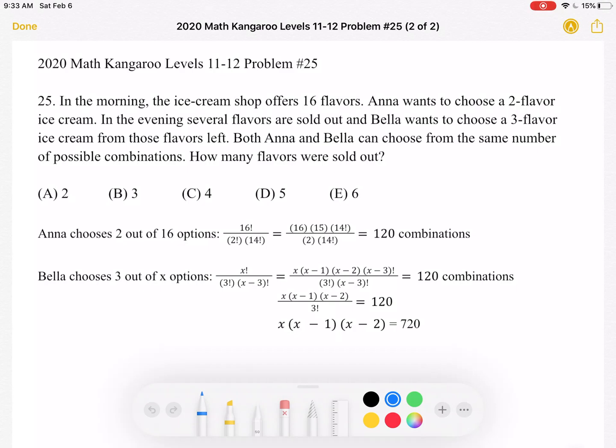So let's start with Anna. We know that Anna wants to choose a two-flavor ice cream from 16 flavors. So the total number of ways she can do that is 16 choose 2, which is 16 factorial over 2 factorial times 14 factorial. We can rewrite 16 factorial as 16 times 15 times 14 factorial. In this way, we can cancel out the two 14 factorials and we're left with 16 times 15 over 2.